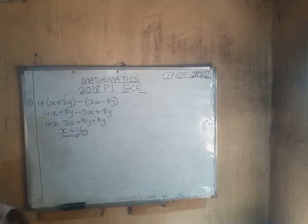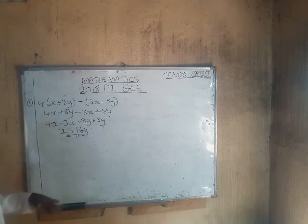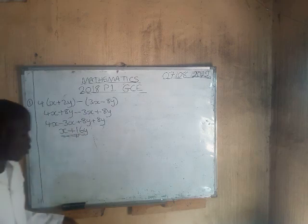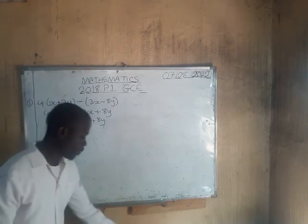At this point we cannot simplify further because the remaining terms are unlike terms, according to the laws of algebra. So the final answer is x + 16y.